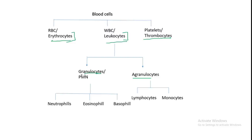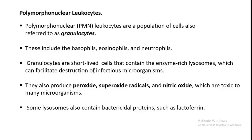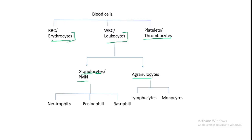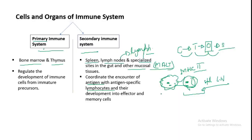In granulocytes there are three cells: neutrophils, eosinophils, and basophils. In agranulocytes there are lymphocytes and monocytes. Try to remember this chart — everything will become clear. Now we need to learn how all these cells develop.